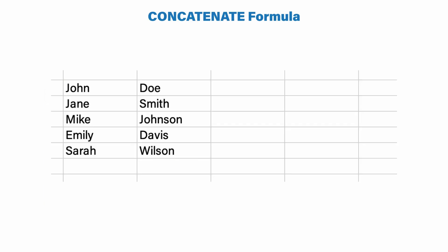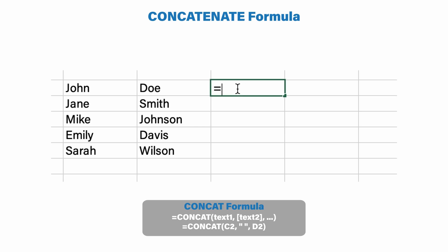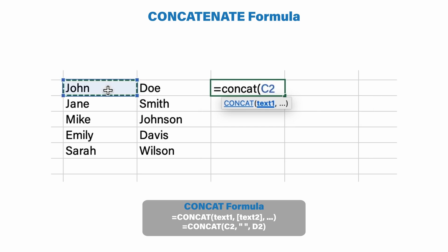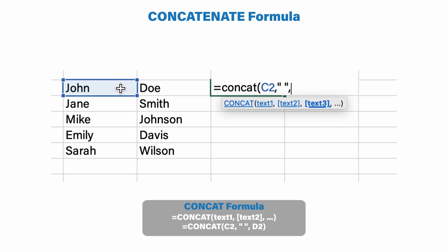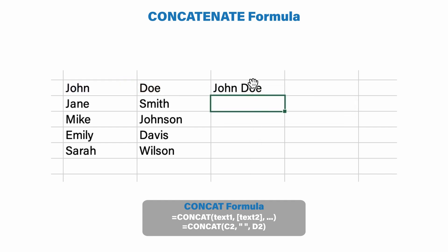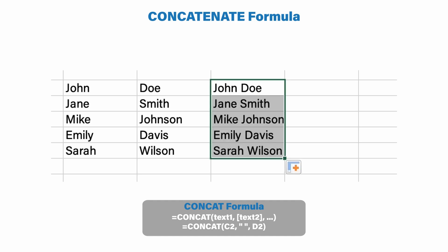Next we have the CONCATENATE formula. This is useful when you have individual pieces of information in different columns that you want to combine into one cell. You enter CONCAT, then choose the first piece of information, add a comma, include a space between names using quote-space-quote, add another comma, and then the last name. So now we have the first and last name in one cell, and we can simply click and drag this formula to combine all of the names.